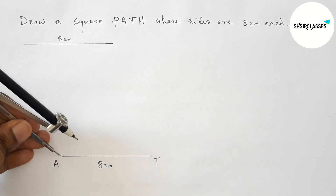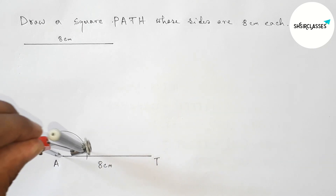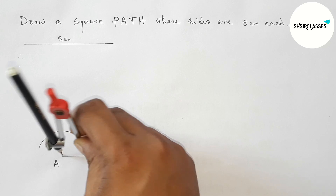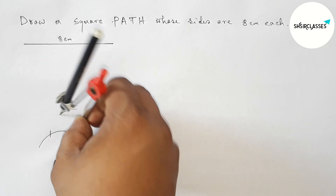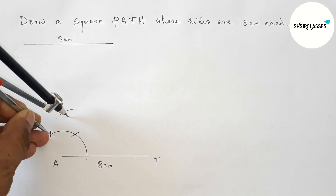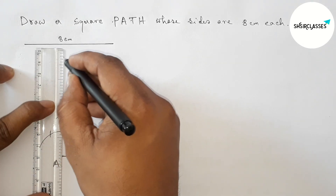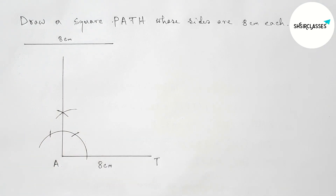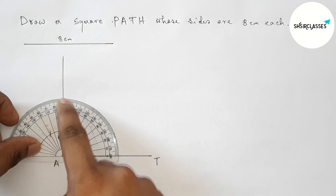Next, drawing a 90 degree angle on point A with the help of a compass. First drawing an arc with any length, then putting the compass here and taking the same length to cut an arc, then putting the compass again with the same length to cut another arc. Joining the line to get a 90 degree angle. Checking — this is perfectly a 90 degree angle.